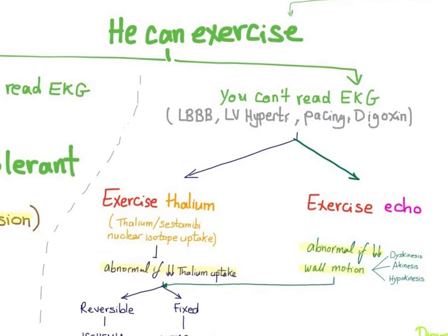If the patient cannot read his EKG, you do exercise thallium or exercise echo. Since I cannot read the EKG, I will use other things than the EKG. With exercise thallium, the patient runs on the treadmill, but instead of using an EKG, we use thallium or sestamibi nuclear isotope uptake.